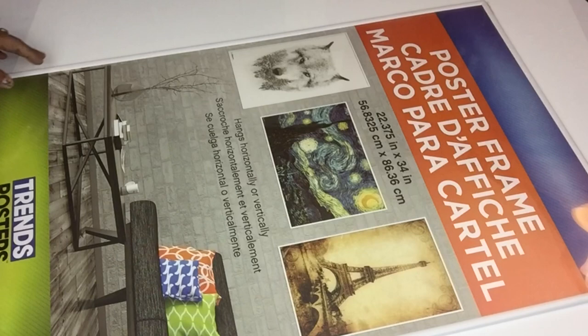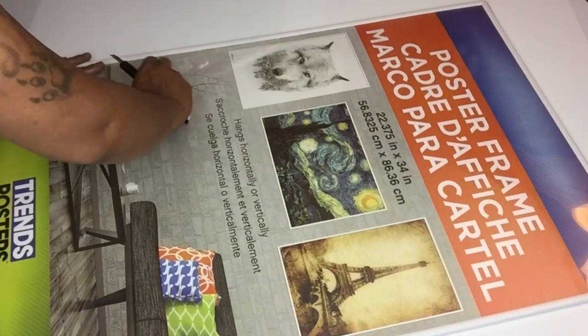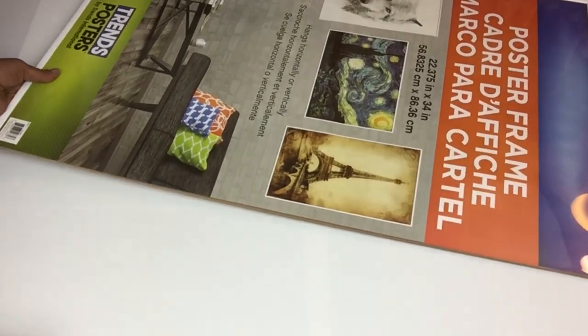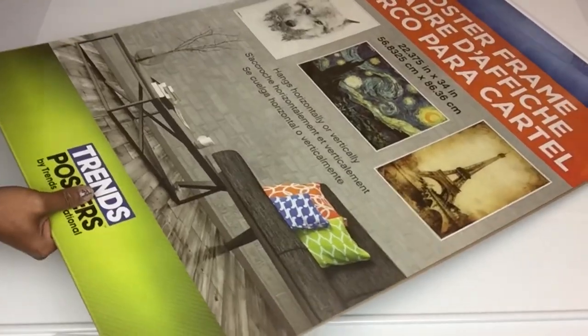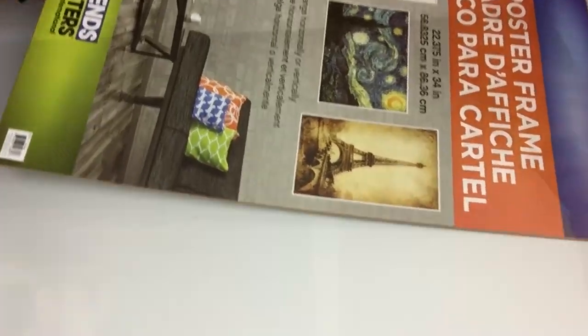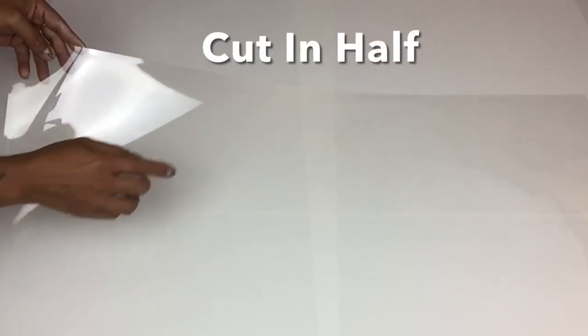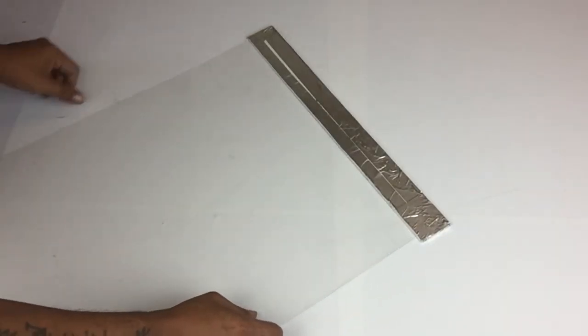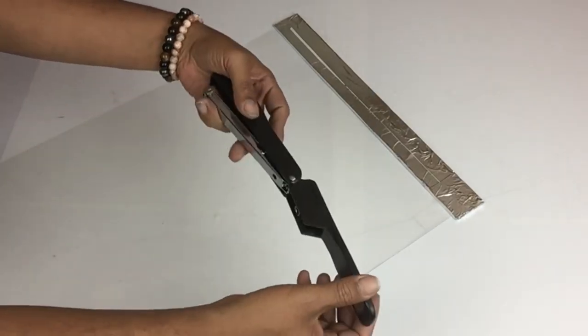Next I purchased this 22 by 34 poster frame and I'll only be using the plastic sheet that comes with it. Next I took the plastic sheet and I cut it in half using scissors. Next I'll take my foam strip and I'll place the plastic on top using the back side, and then I'll staple it down.